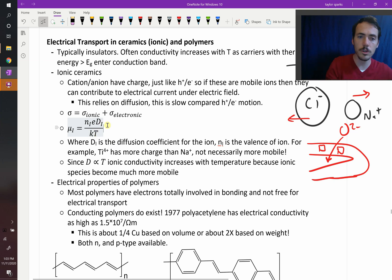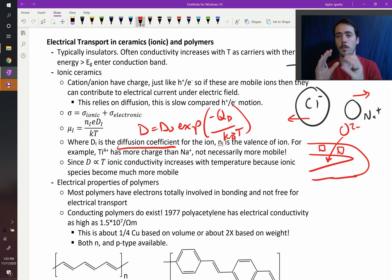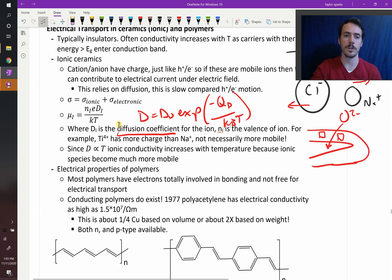Not only is it going to drop due to thermal vibrations, but D itself, the diffusion coefficient, we know depends on temperature exponentially. D equals D naught exponential of the activation energy for diffusion over thermal energy. So even though it is going to vibrate more and that's going to slow things down, you get much higher diffusion coefficients so you actually see a rise with temperature and it becomes more conductive typically.